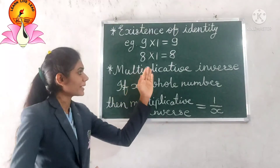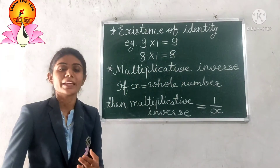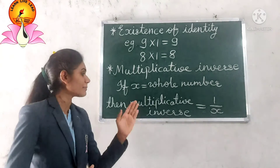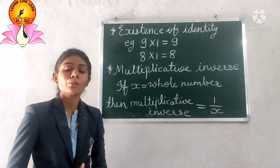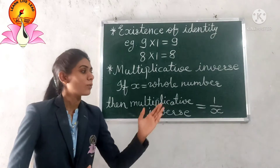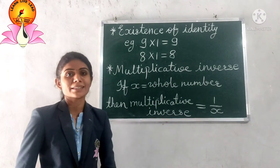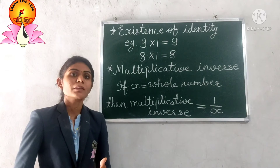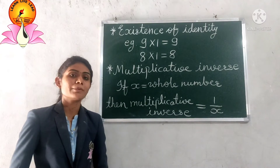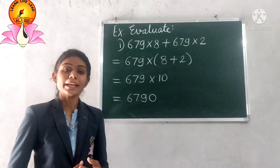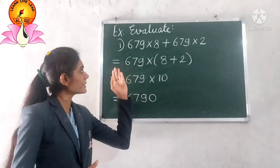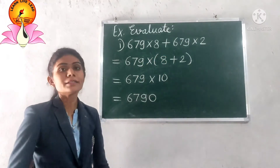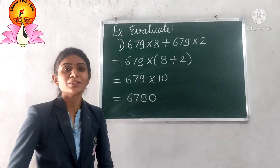Next, the multiplicative inverse. If x is any whole number, then its multiplicative inverse will be 1/x. For example, if 5 is a whole number, then its multiplicative inverse will be 1/5.